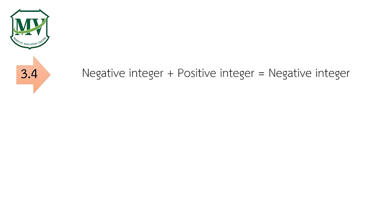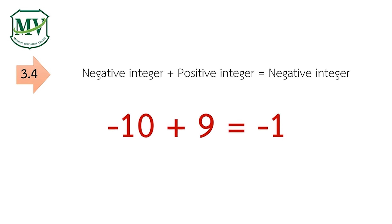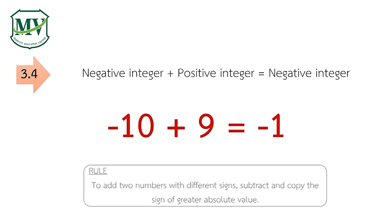And last, negative integer plus positive integer equals negative integer. Your answers may vary. For example, negative 10 plus positive 9 equals negative 1. Remember, to add two numbers with different signs, subtract 10 minus 9 and copy the sign of the greater absolute value, which is negative. That's why the answer is negative 1.